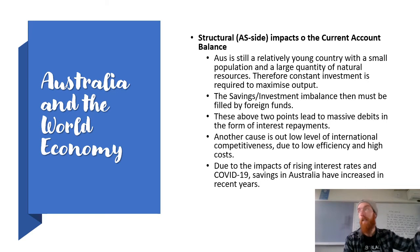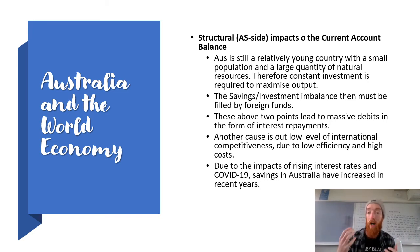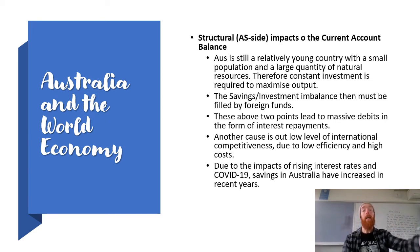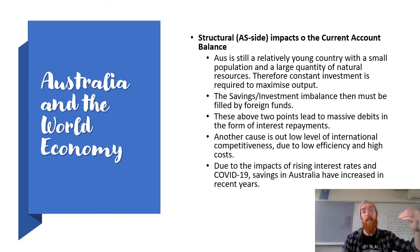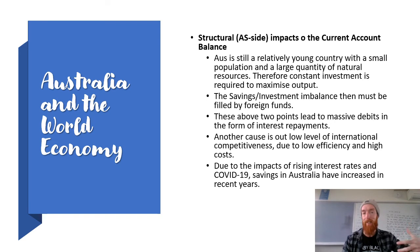Another structural reason for our historical current account deficit is low international competitiveness, due to low efficiency and high production costs from our high wage rates — Australia has one of the highest minimum wages in the world. On the upside, the impacts of rising interest rates and COVID have led people to save significantly more money. We are currently less reliant on foreign borrowing as we can dip into our own savings to invest, which has improved the structural aspects of our current account balance in the short term.